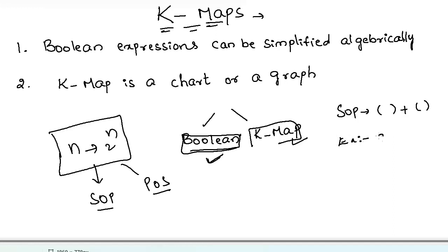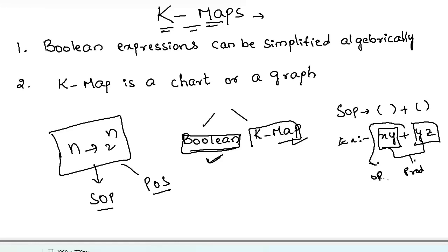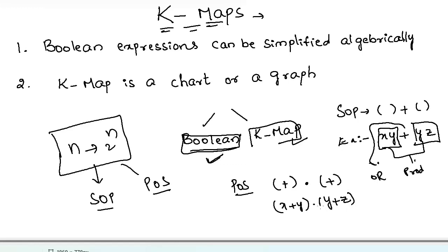An example of SOP terms is: X·Y + Y·Z. In the term X·Y and Y·Z, within each term the relation between literals is a product (AND) operation, and between the two product terms there is an OR operation. In POS form, we have sum terms. The example for POS is (X+Y)·(Y+Z). In between the literals within each sum term there is an OR operation, and between the sum terms the relation is a product (AND) operation.